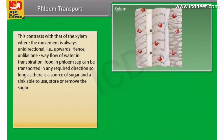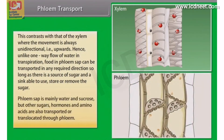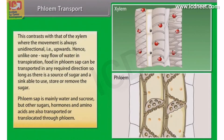Phloem sap is mainly water and sucrose, but other sugars, hormones, and amino acids are also transported or translocated through phloem.